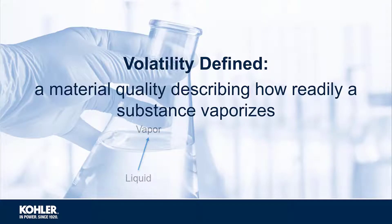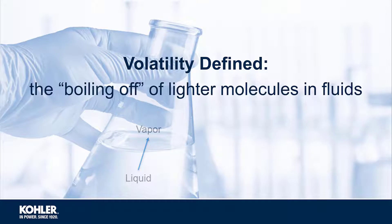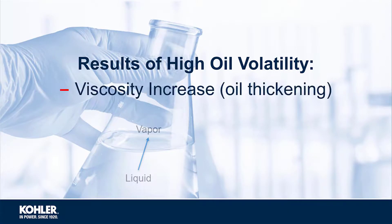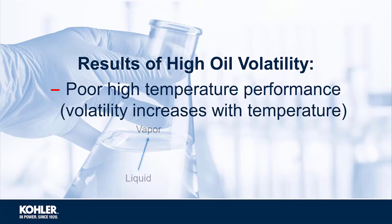Volatility is a material quality describing how readily a substance vaporizes. Think of it as the boiling off of lighter molecules in fluids like oil. As these light ends are vaporized, they enter the combustion chamber where they are more easily burned and consumed. When light ends leave, the heavy ends remaining are more viscous and the oil becomes thicker. Increasing oil temperature increases the rate at which this vaporization occurs.